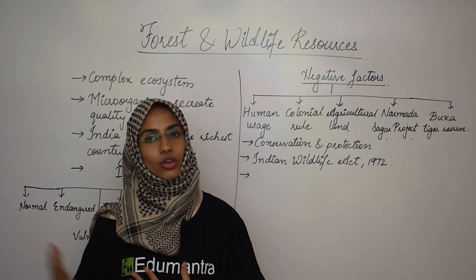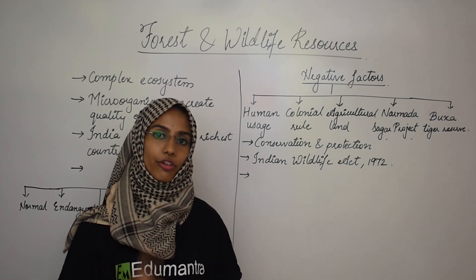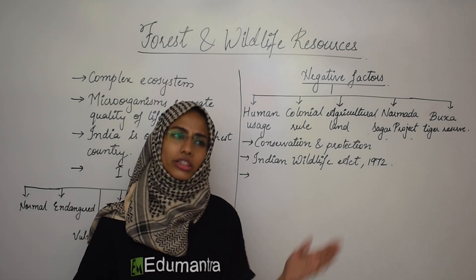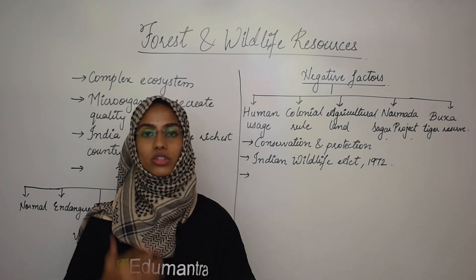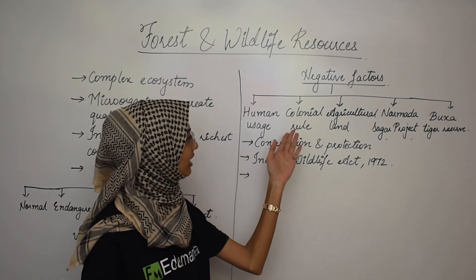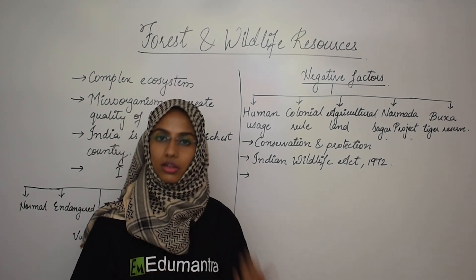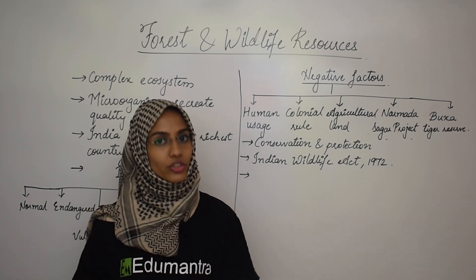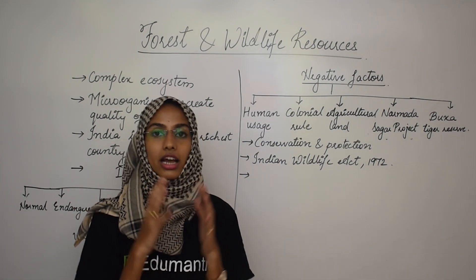The first negative factor is human usage. All these plants and animals are a natural resource — for example, wood, timber, fuel, etc. We, human beings, are using them for personal use very freely and take these natural resources for granted. That is why their quantity is reducing. The next factor is colonial rule. During the British period, many things were invented and developed, but due to those inventions — railway construction, buildings, factories — the quantity of forest land and agricultural land was reduced.